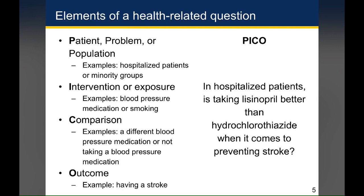The C in PICO stands for comparison. So an example would be if your intervention was a specific type of blood pressure medication, a different type of blood pressure medication might be a comparison group, or not taking a blood pressure medication would be another comparison group. The interpretation of what you find is going to change dramatically based on what your comparison is.